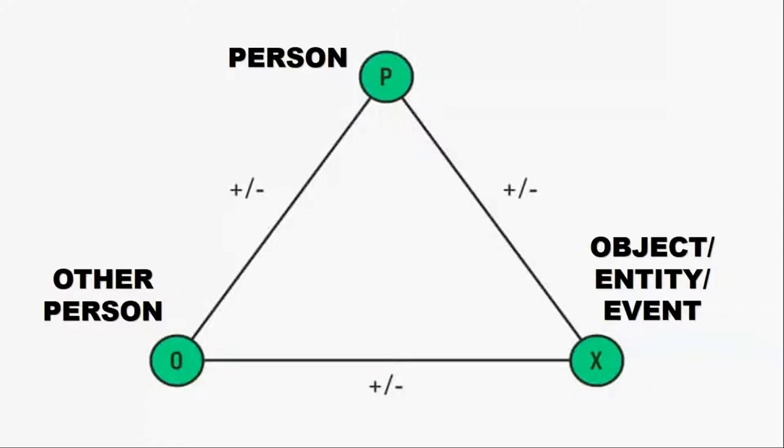Now this relationship between the individuals or the objects on the POX model can be either positive or negative, and this is what can determine if a relationship is balanced or not. A triadic relationship is thought to be balanced when it includes either no negative relations or an even number of negative relations.